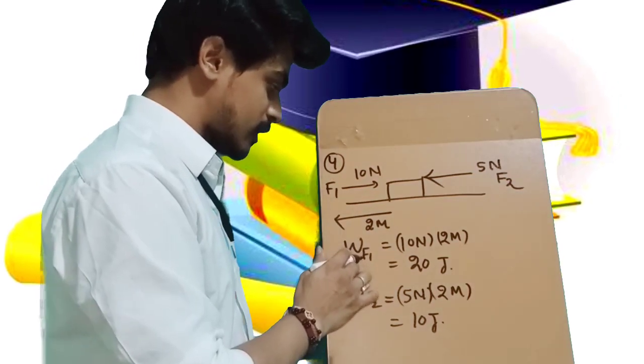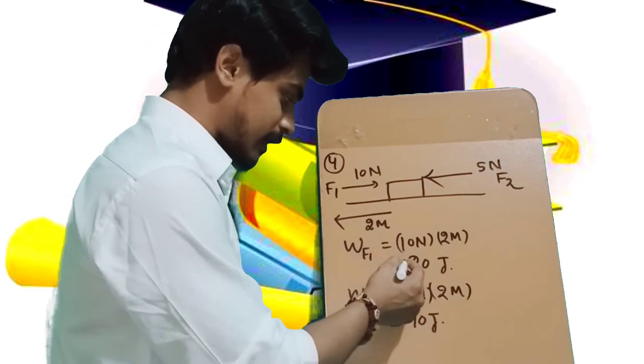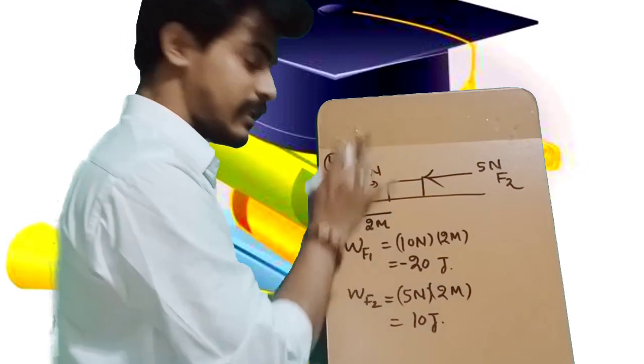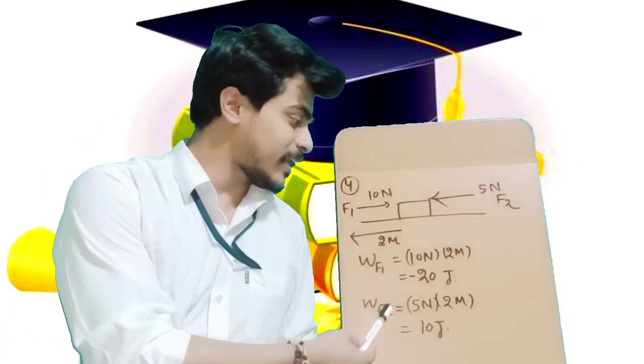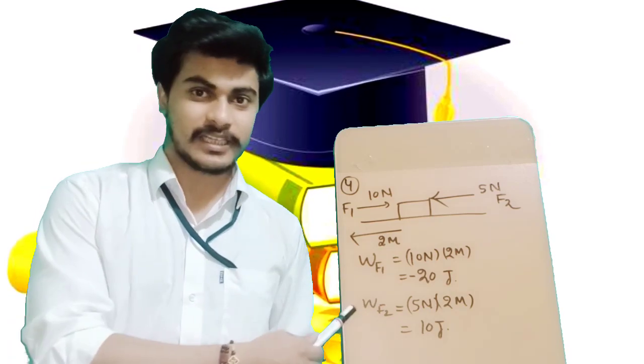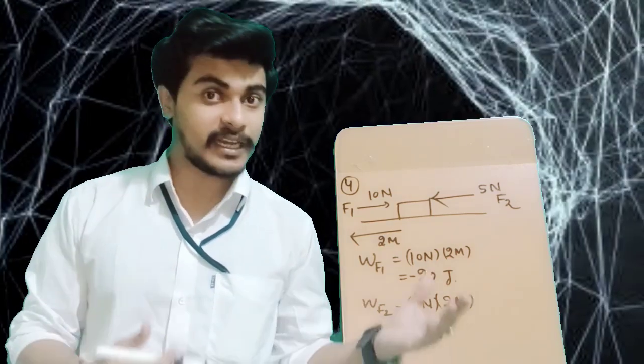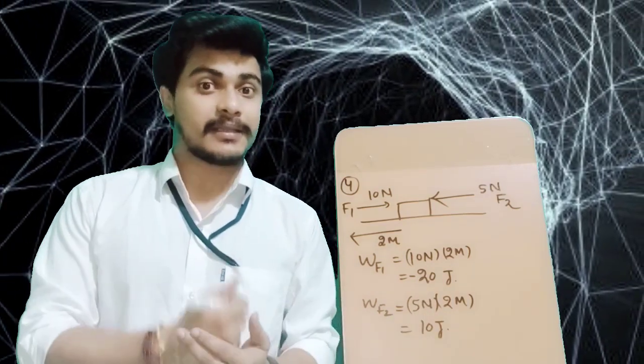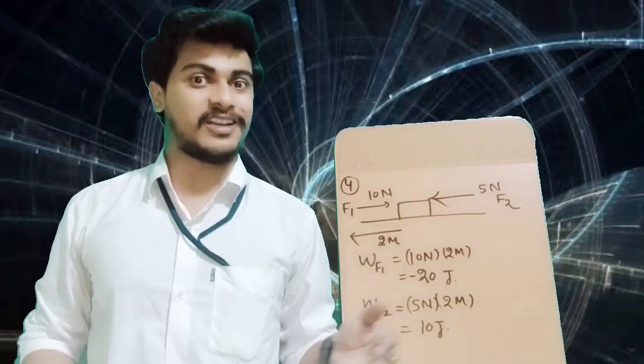If the force and displacement are in the same direction, then the work done is positive. But if the force and displacement are in opposite directions, then the work done is negative. That's all.